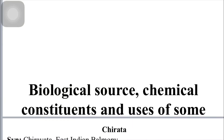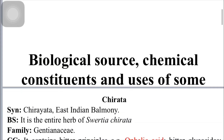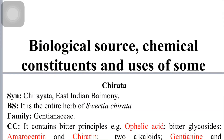We will discuss the biological source, chemical constituents, and uses of some drugs. First, we are going to take Chirata. The synonyms for Chirata are Chirayata and East Indian Balmoney. The biological source is Swertia chirata, which is the biological name of Chirata.